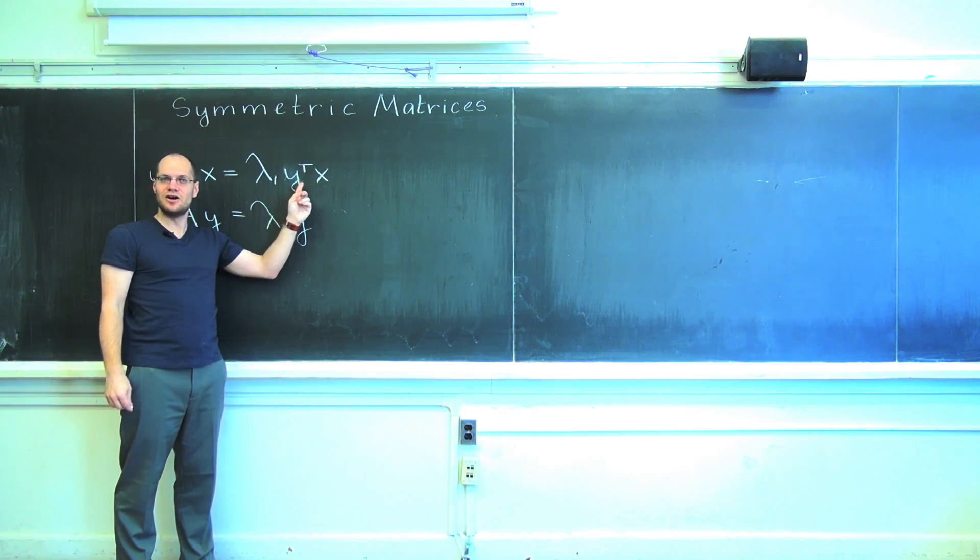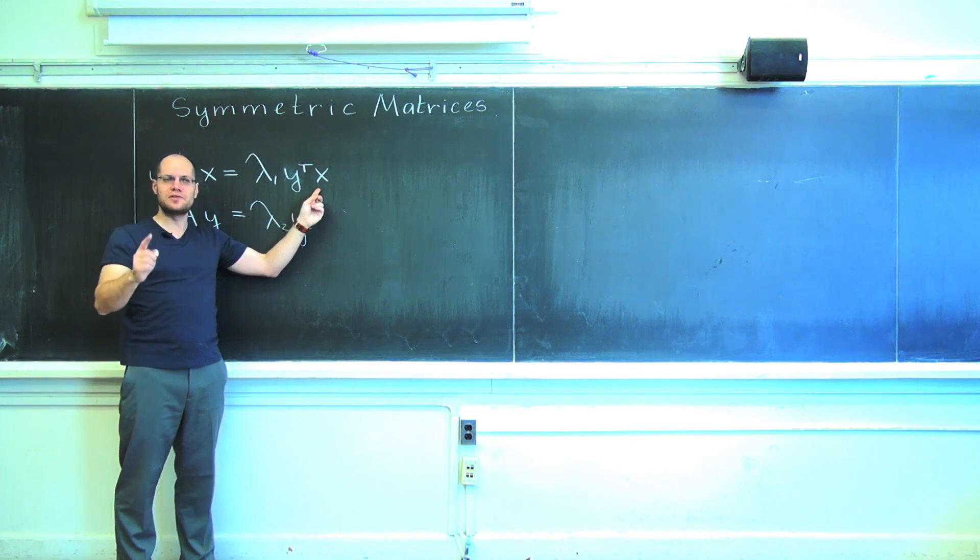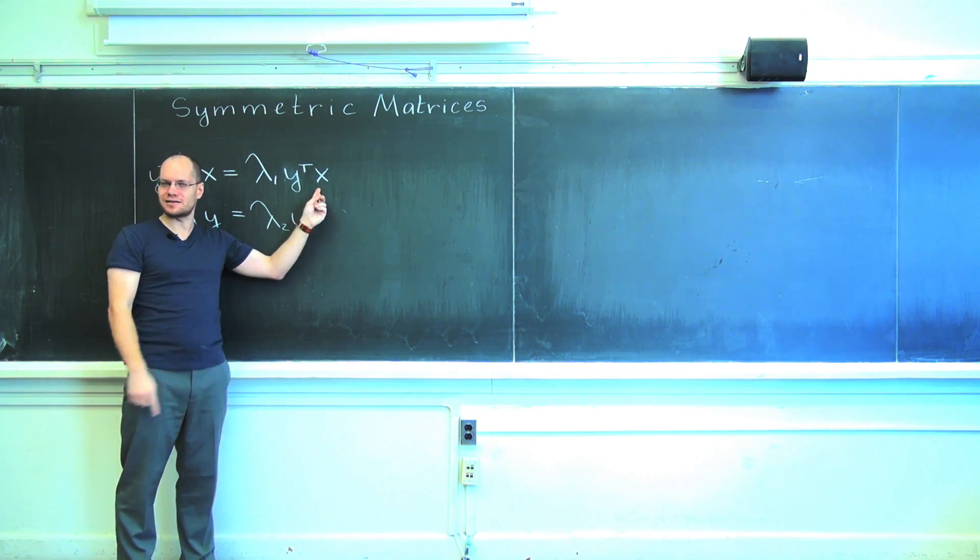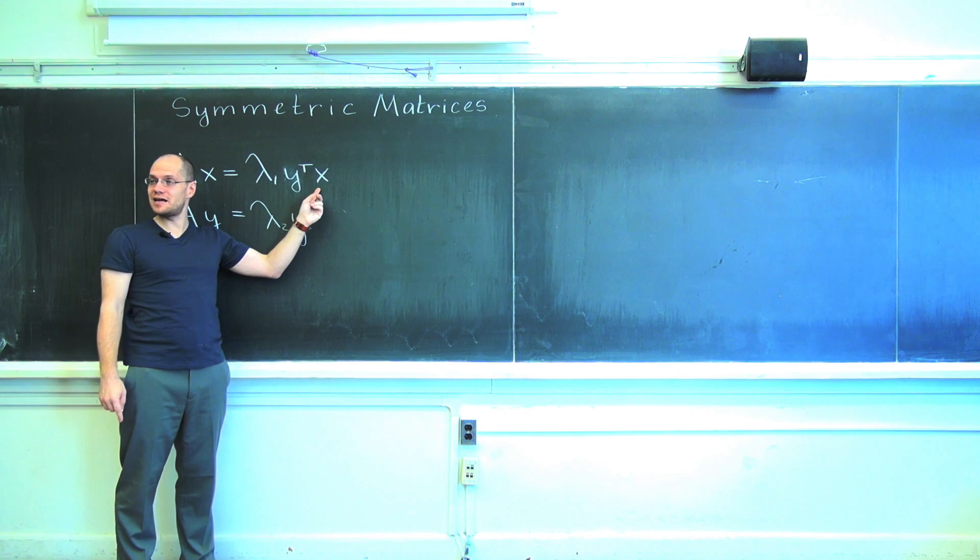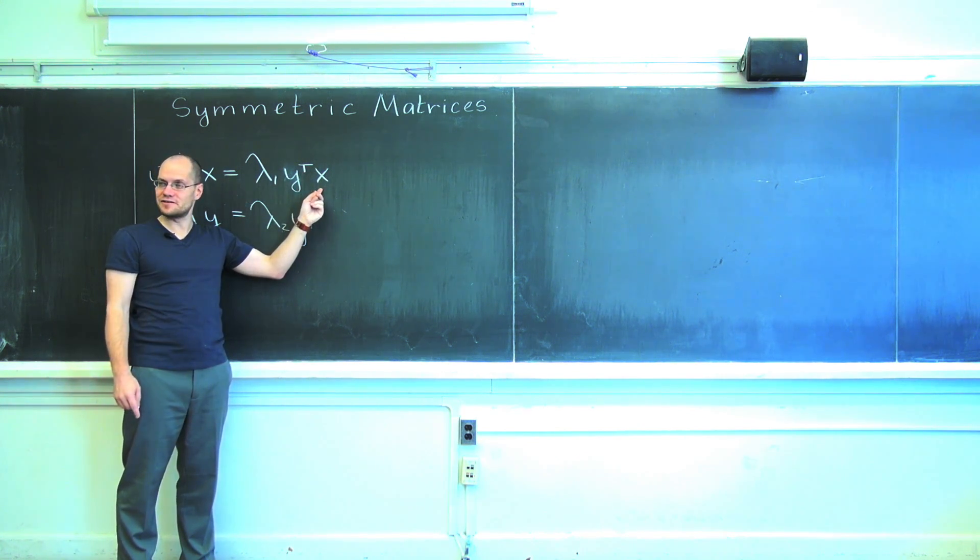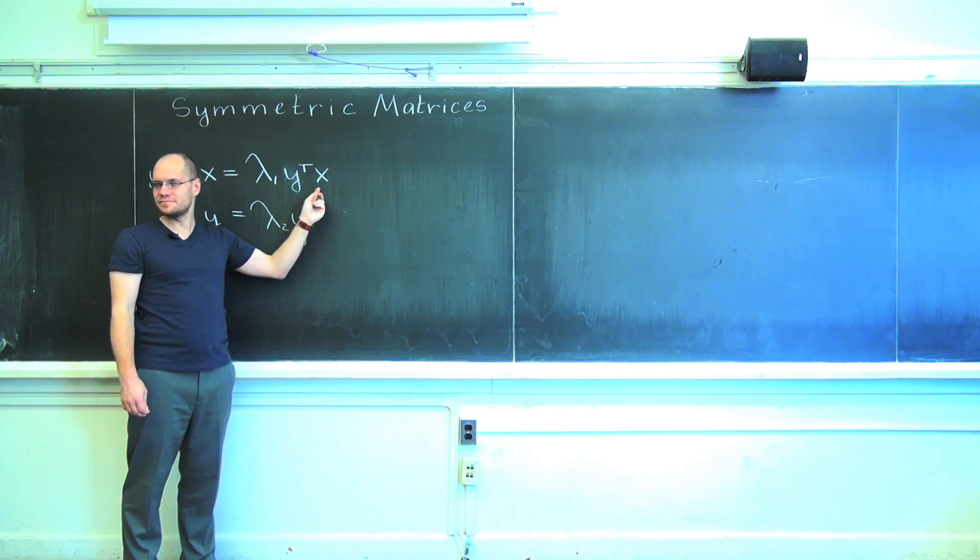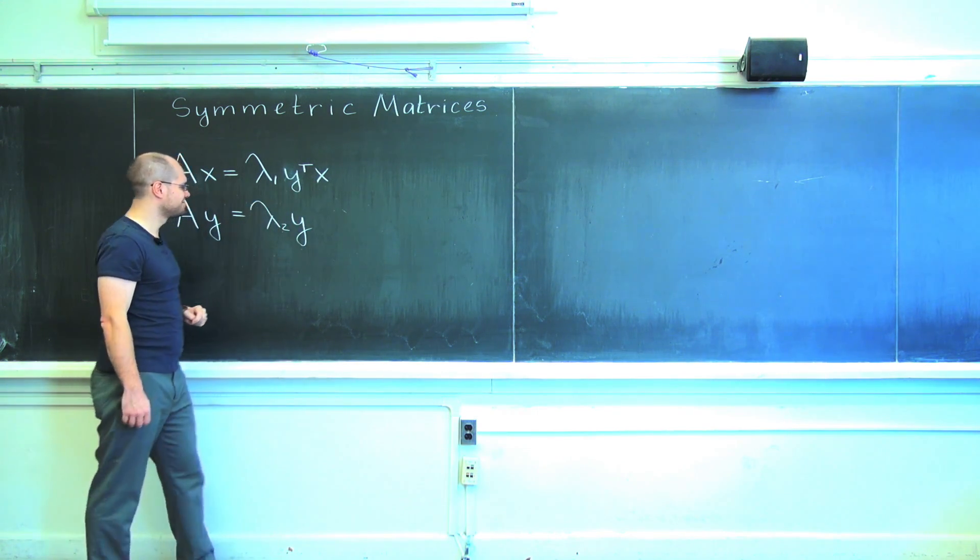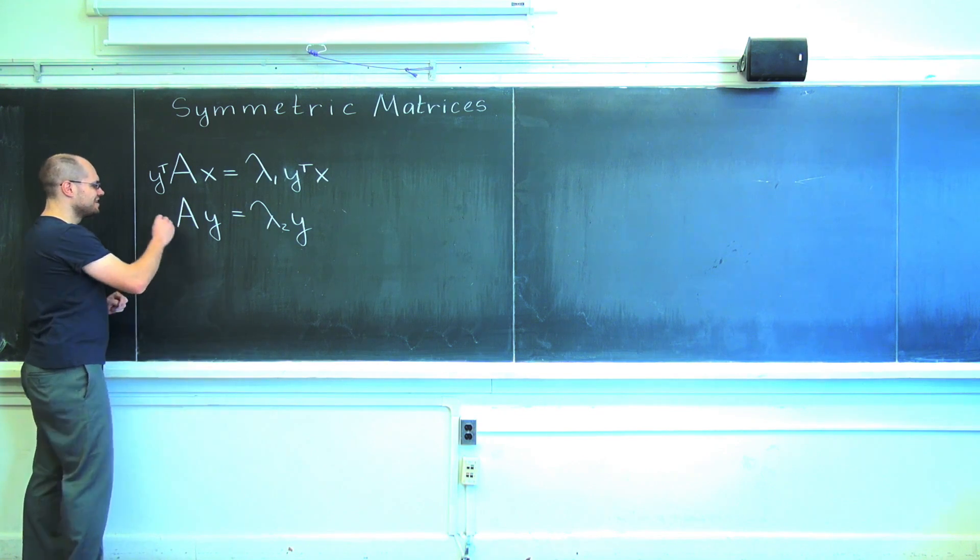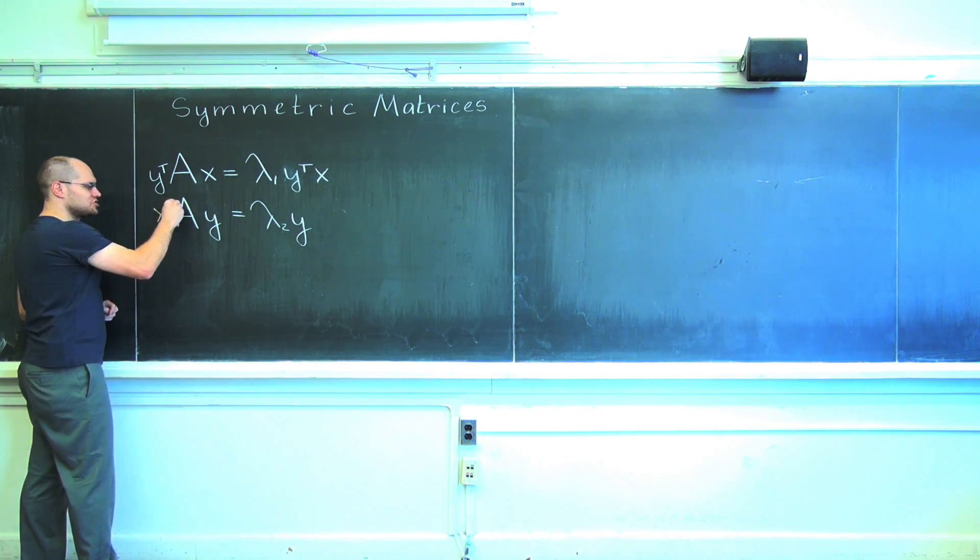And do you see what we have here? This is Y dotted with X. This is the inner product of Y and X with respect to the standard inner product. If it wasn't a standard product, this would be a little different. It would look like what we'll discuss in exactly a week and a half.